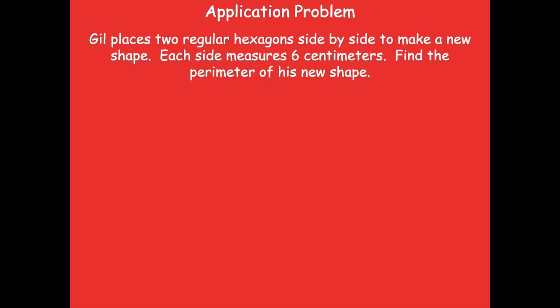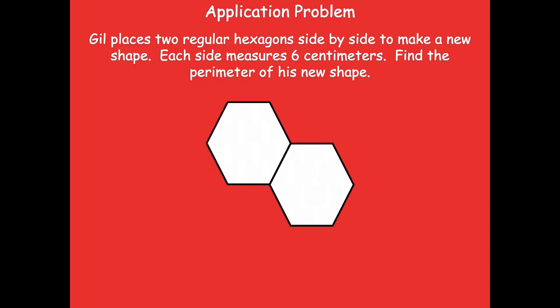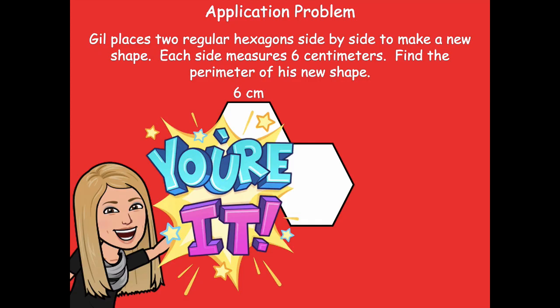Today we're going to start off with our application problem. This question says: Gil places two regular hexagons side by side to make a new shape. Each side measures six centimeters. Find the perimeter of his new shape. Here's the shape that Gil made, and remember it says that each side measures six centimeters. So pause the video, solve this problem, and then click play when you're ready to go over it together.